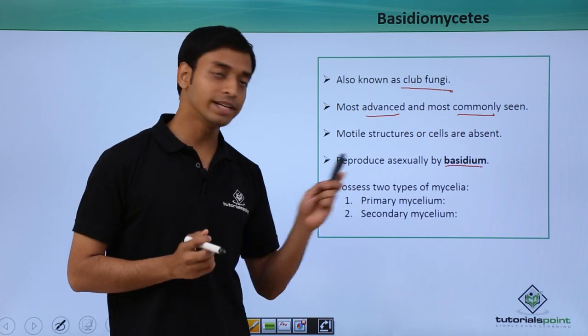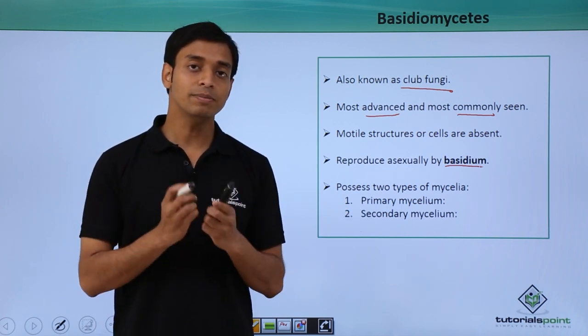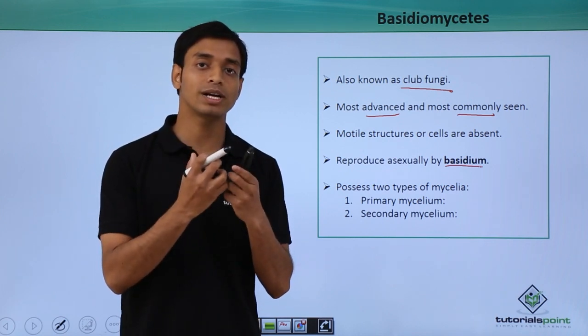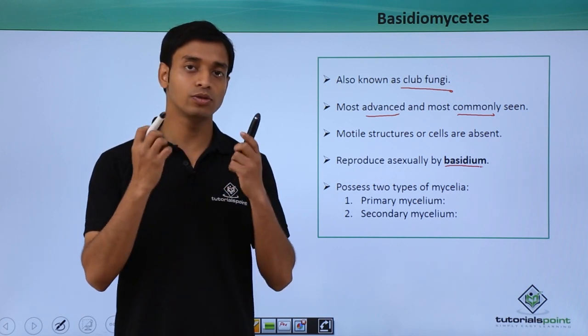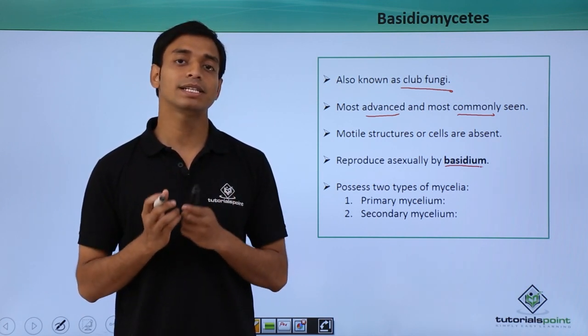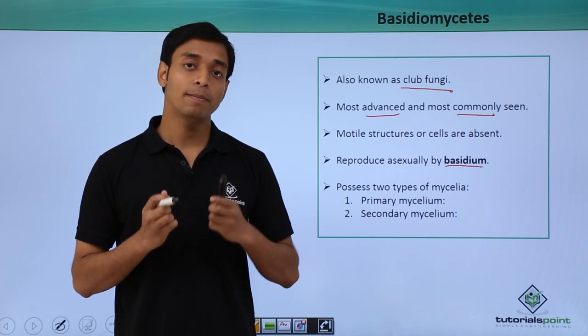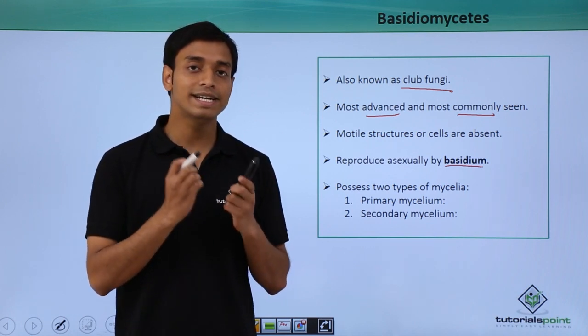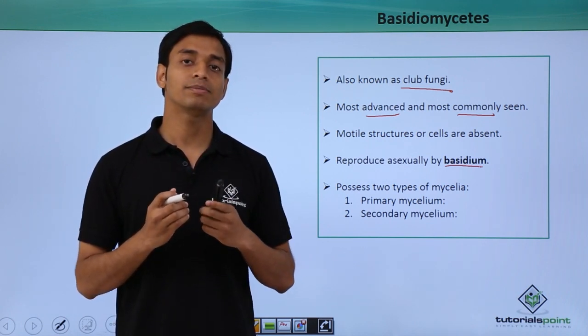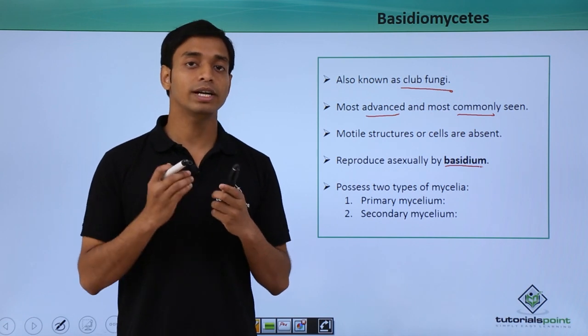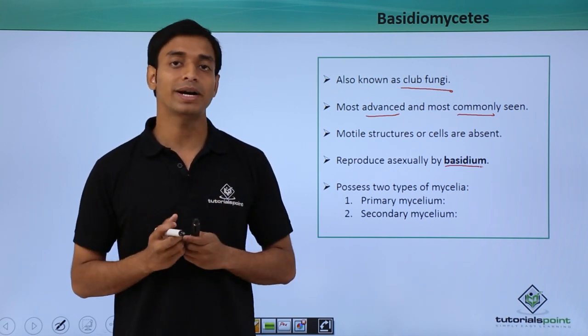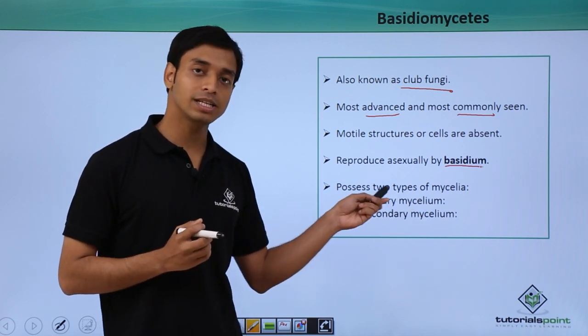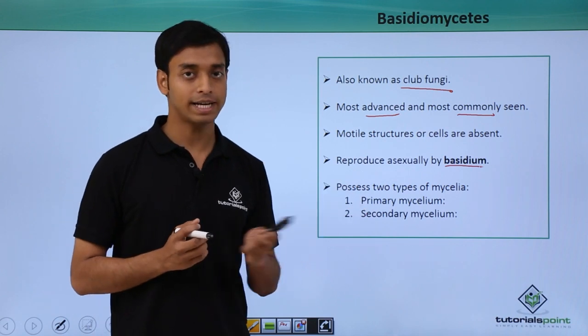The second type is secondary mycelium. Sometimes plasmogamy (the fusion of protoplasm or cytoplasm) is followed by karyogamy (the fusion of nucleus). Sometimes plasmogamy happens, but karyogamy is delayed. This intermediate phase is known as the dikaryophase. In this dikaryophase, it gives rise to a new type of mycelium known as secondary mycelium.